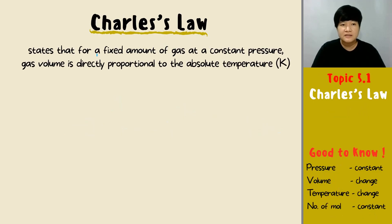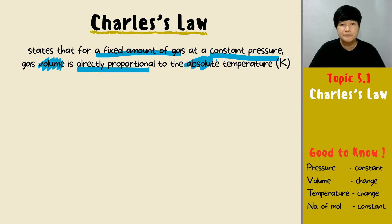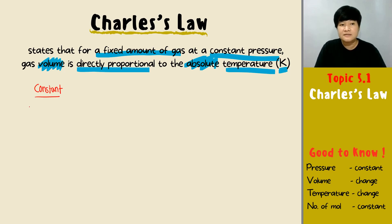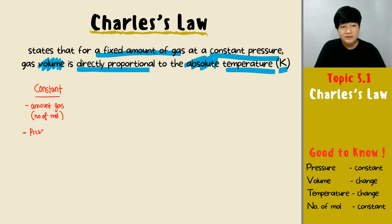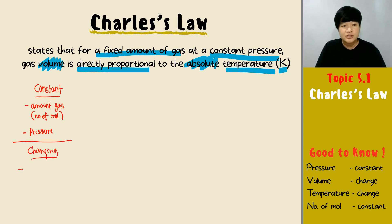First and foremost, Charles' Law states that at a fixed amount of gas and constant pressure, the volume of the gas is directly proportional to the absolute temperature in Kelvin. So we have two things that remain constant: the amount of gas — also called number of moles — and the pressure. The two variables that change in Charles' Law are the volume and the temperature of the gas.